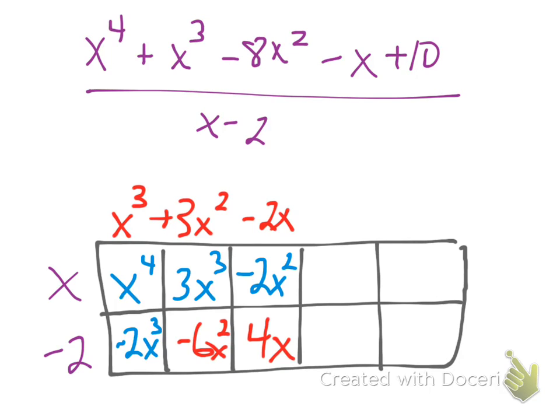Continuing the process, these two boxes here now need to add up to a negative x. So now I have a negative 5x in that box. On top then is minus 5. And then I have a positive 10 down here.